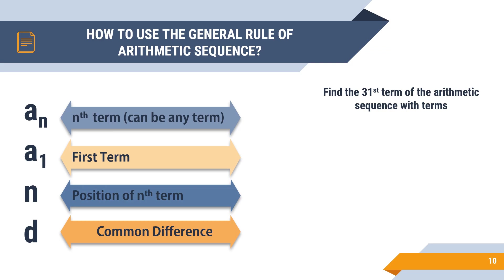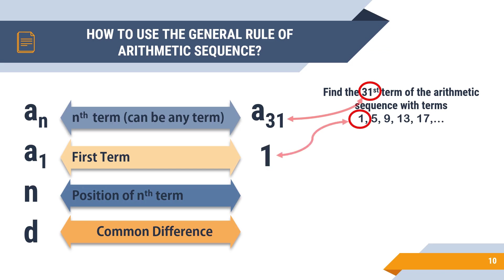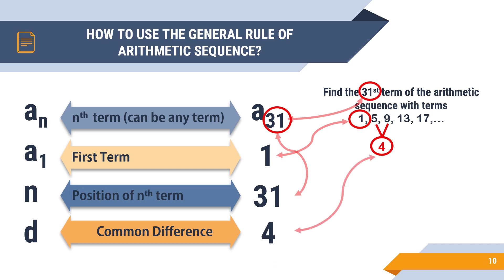Let's try it on our previous problem: find the 31st term of the arithmetic sequence 1, 5, 9, 13, and 17. We identify the values: since we are looking for the 31st term, a_n = a₃₁. The first term is 1, so a₁ = 1. The position n = 31. The common difference, obtained by subtracting consecutive terms — 9 minus 5 — gives d = 4.